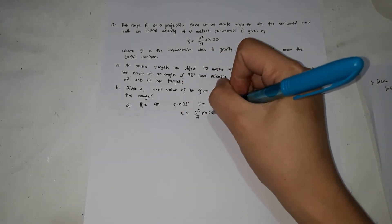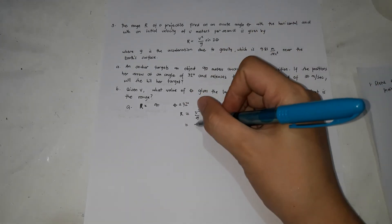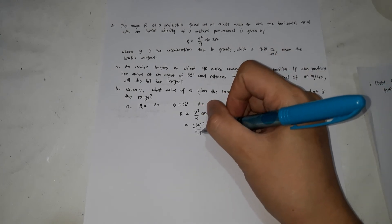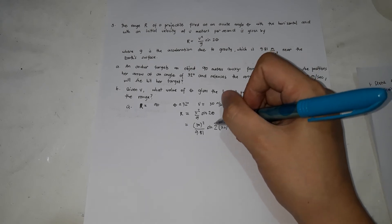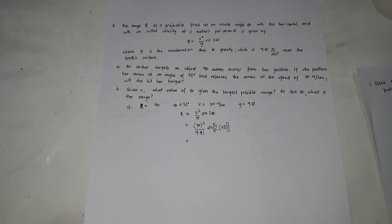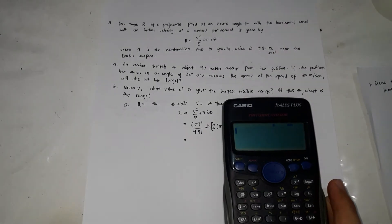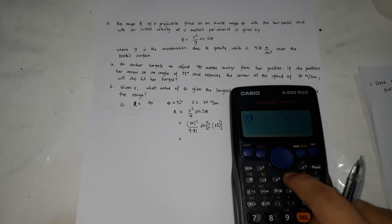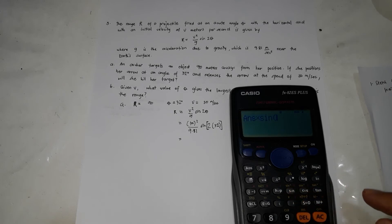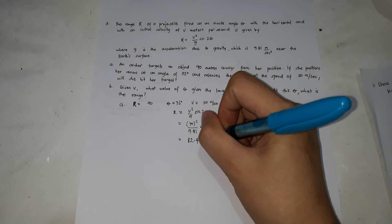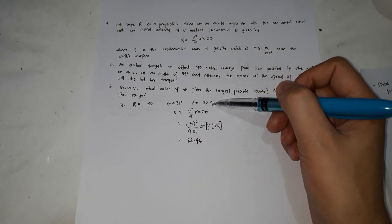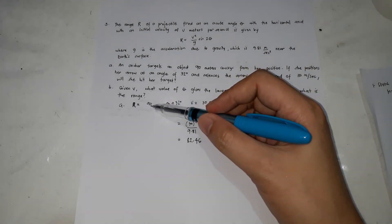Computing: R = (30²/9.81) · sin(2 × 32°) = (900/9.81) · sin(64°) ≈ 82.46 meters. Since 82.46 m < 90 m, the arrow will not reach the target. The answer is no — she will not hit the target.